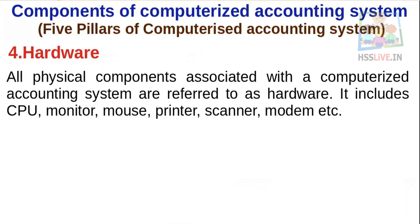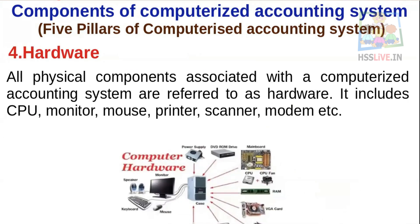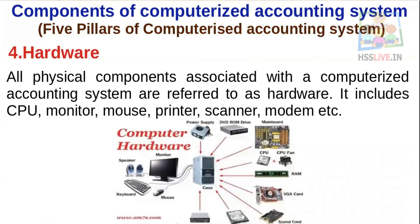Number four: Hardware. All physical components associated with the computerized accounting system are referred to as hardware. It includes CPU, monitor, mouse, printer, scanner, modem, etc. These are the physical components of the computerized accounting system.